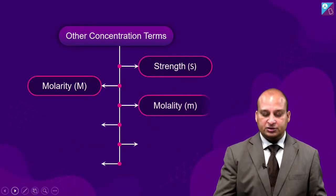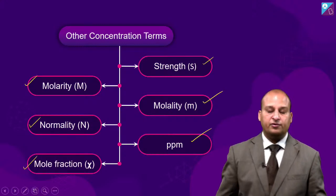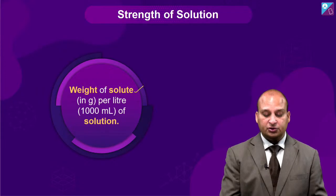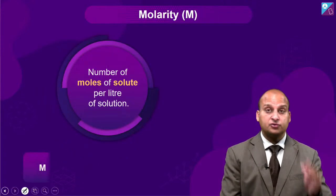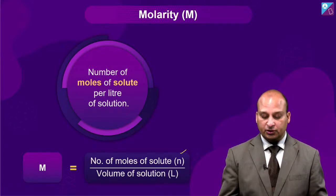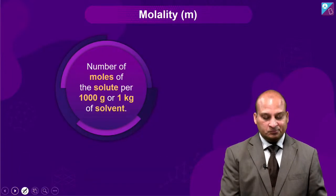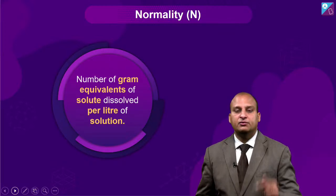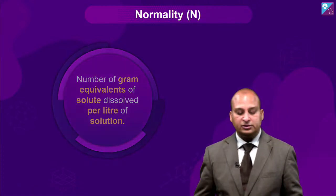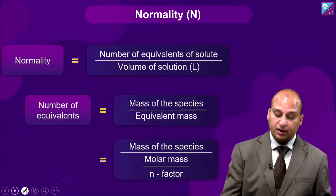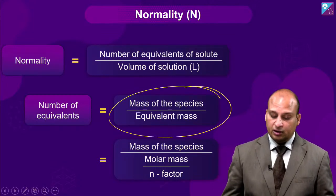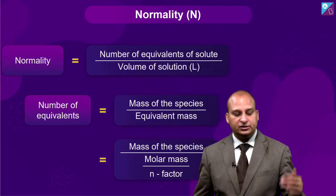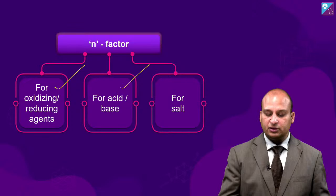Other concentration terms: Strength is weight of solute per litre of solution. Molarity is number of moles of solute by volume of solution in litres. Molality is number of moles of solute by mass of solvent in kilograms. For normality, we talk about number of gram equivalents. Number of gram equivalents is mass upon equivalent mass, where equivalent mass is molar mass divided by n-factor. The n-factor is defined separately for oxidizing and reducing agents, acids and bases, and for salts.